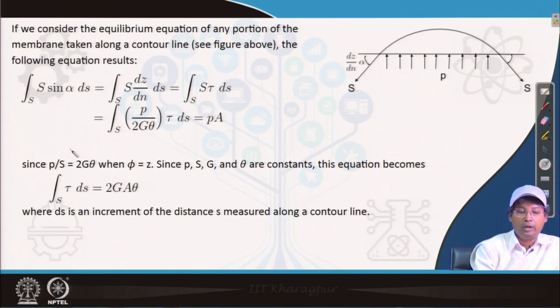What we can get from these equations along a contour line is that S sin α is equals to dz/dn integrated along a contour line. We can easily write that this equals to integration over that contour line for ds length considering a small length ds. And that dz/dn equals to τ, the slope already we have put. Since we have found a relation between p/S equals to 2Gθ, if we substitute here we finally see that the total pressure equals to P into A, that total force acting in this direction.